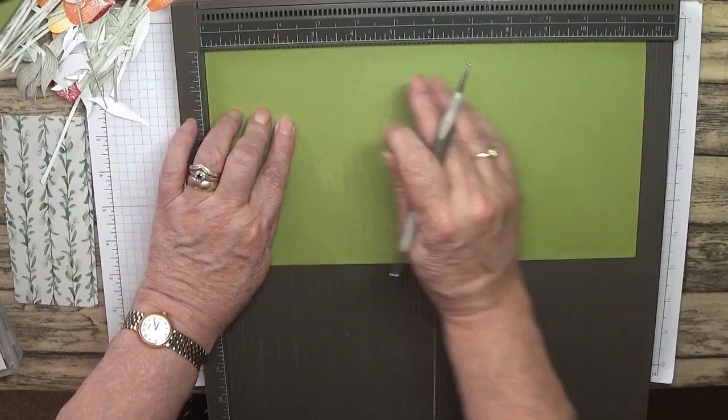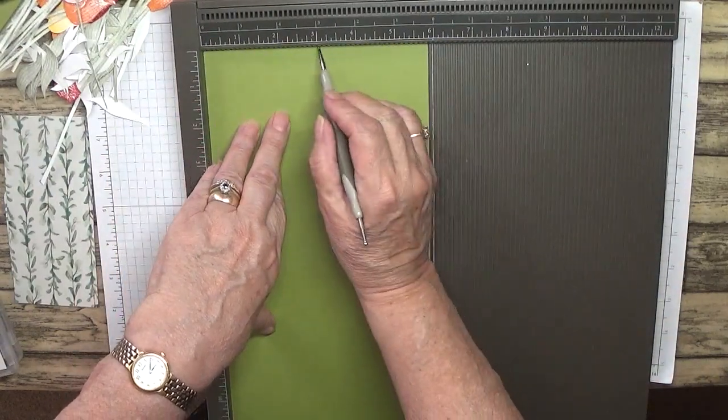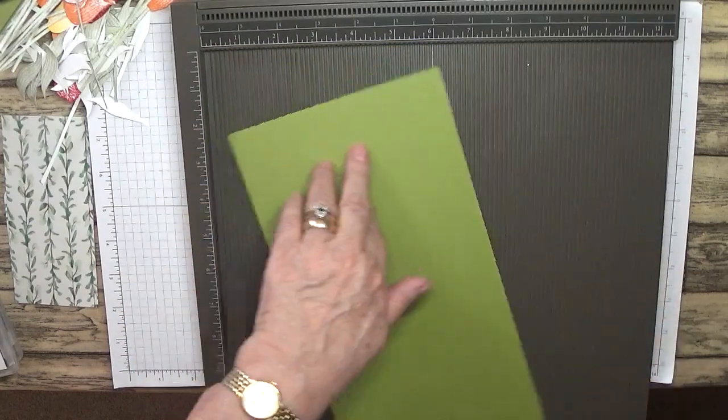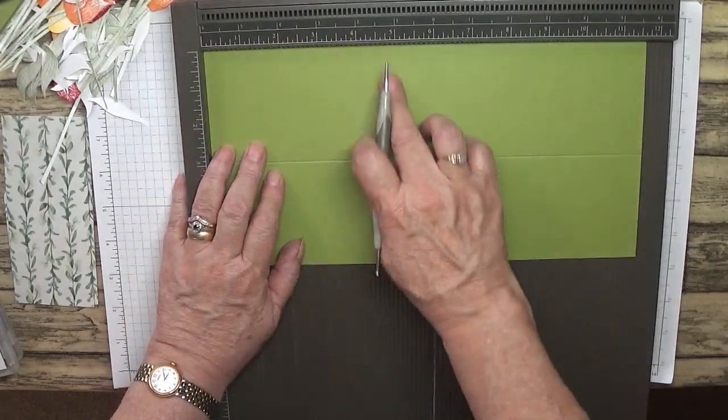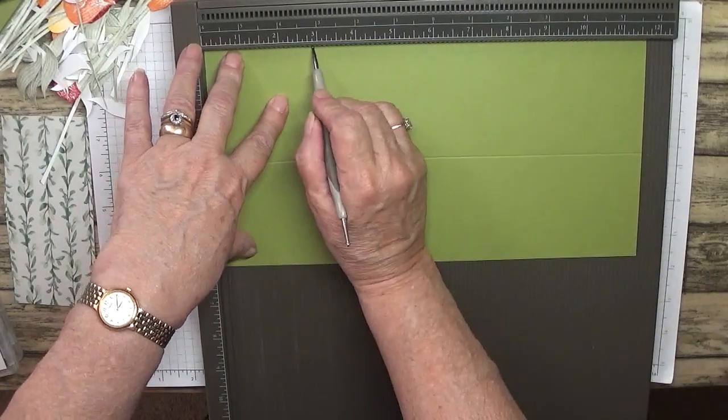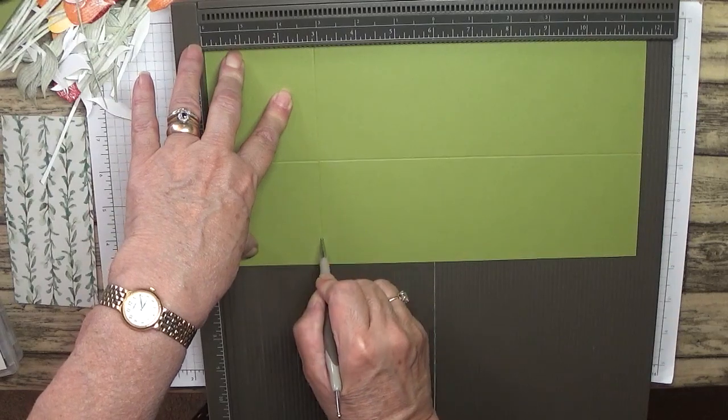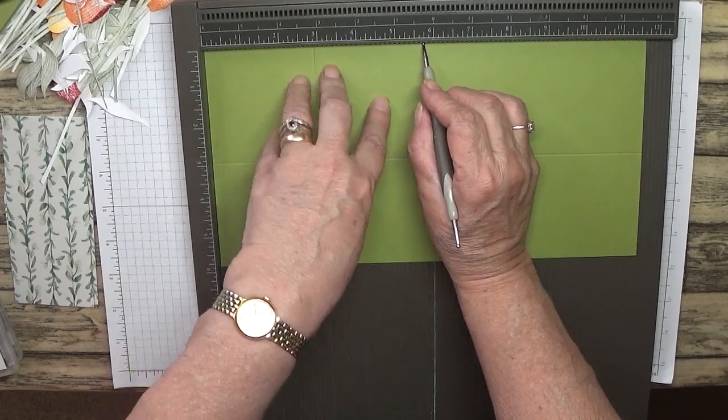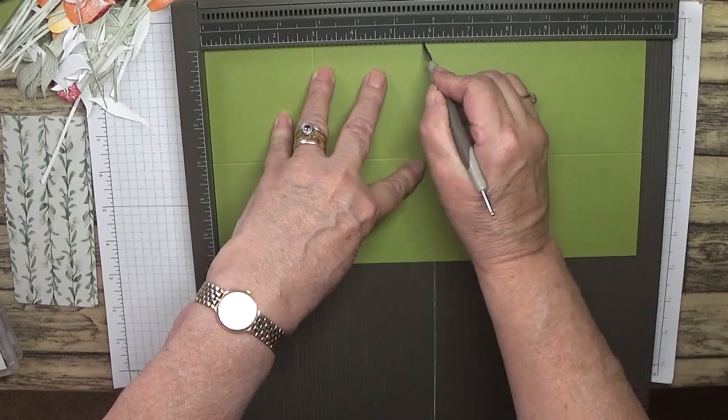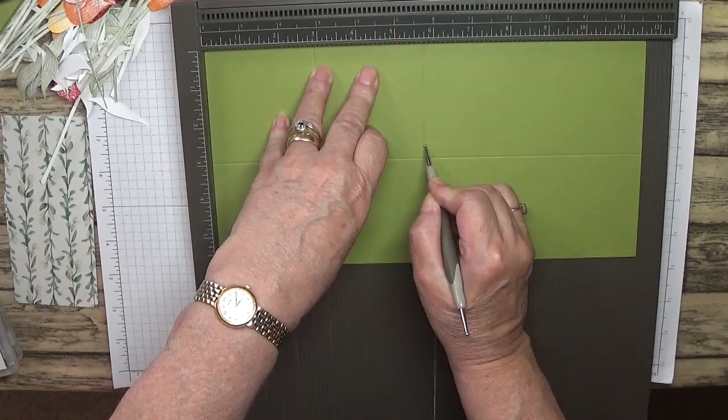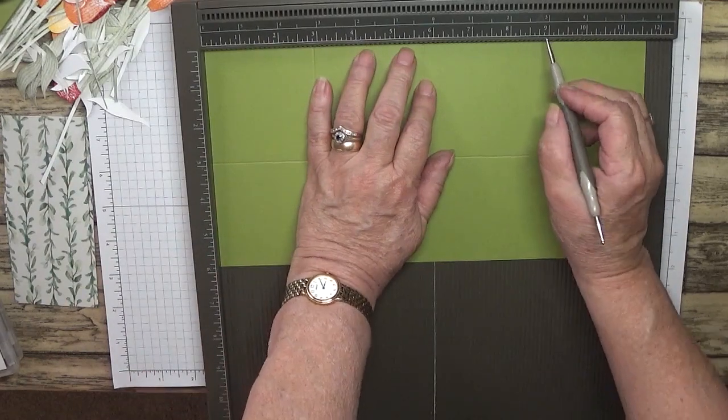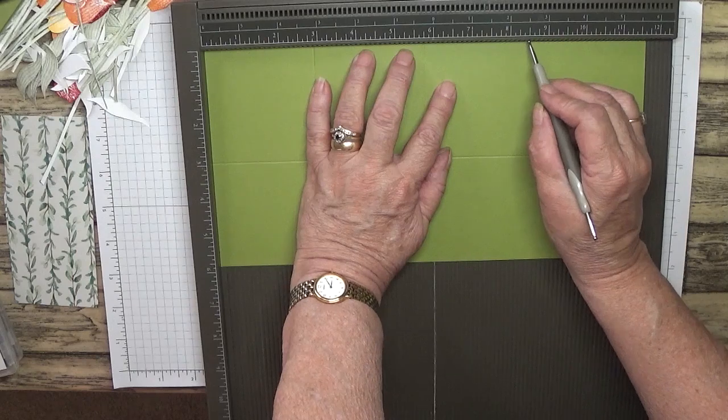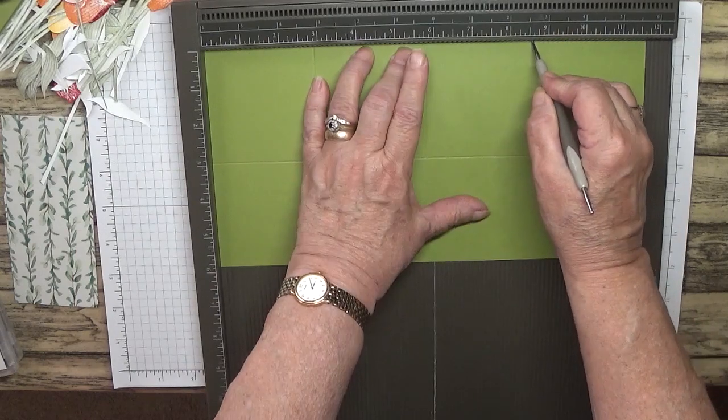Now you want to score this at three inches all the way down. And then with the three inch mark at the top, you want to score this at two and seven eighths all the way down, and five and three quarters to the three inch line. So only to the three inch line. And then eight and five eighths, again just to the line.